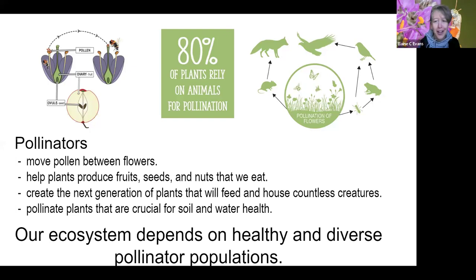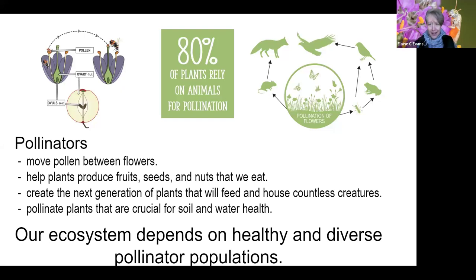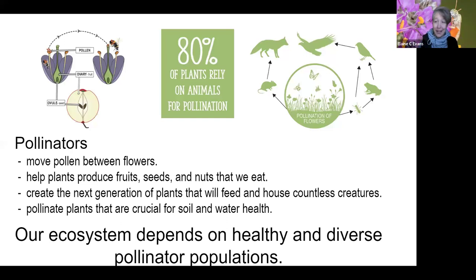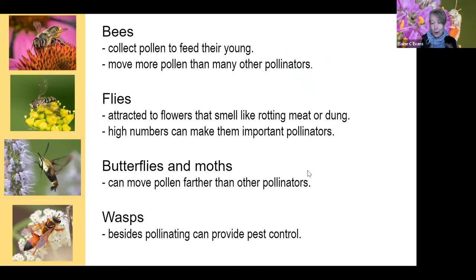Before we launch into the pollinators, I wanted to talk about what pollinators are. Pollinators are a broad group — they're animals that help move pollen between flowers. That action of moving pollen helps plants produce fruits, seeds, and nuts — many of which we eat. They also help create the next generation of plants that feed and house countless other creatures, and these plants are crucial for soil and water health. Our ecosystem depends on healthy and diverse pollinator populations.